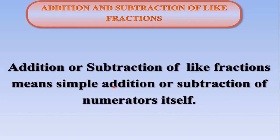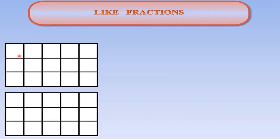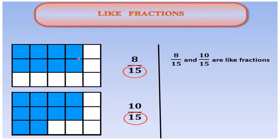Addition or subtraction of like fractions means we are just adding or subtracting the numerators only. In this example you can see two rectangles which have 15 equal parts each, so they are like fractions. The first rectangle has 8 parts shaded out of 15, and the second rectangle has 10 parts shaded out of 15.